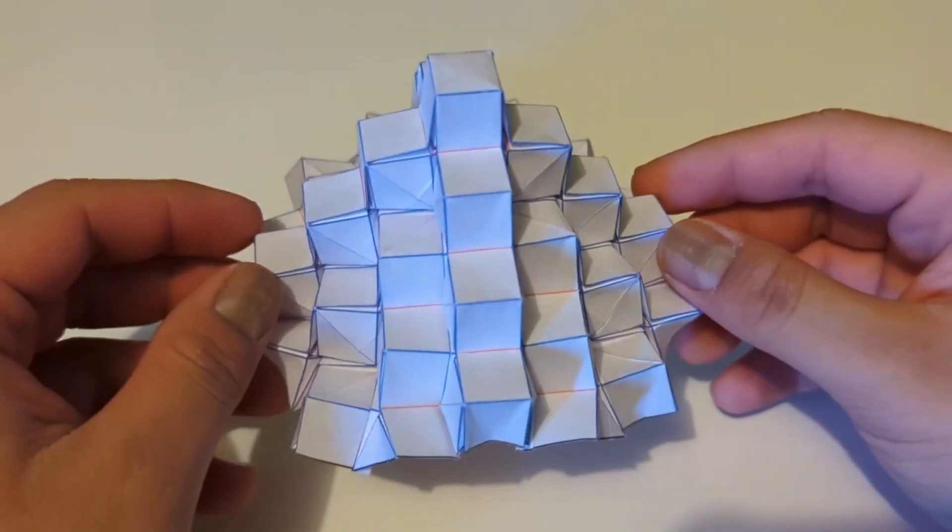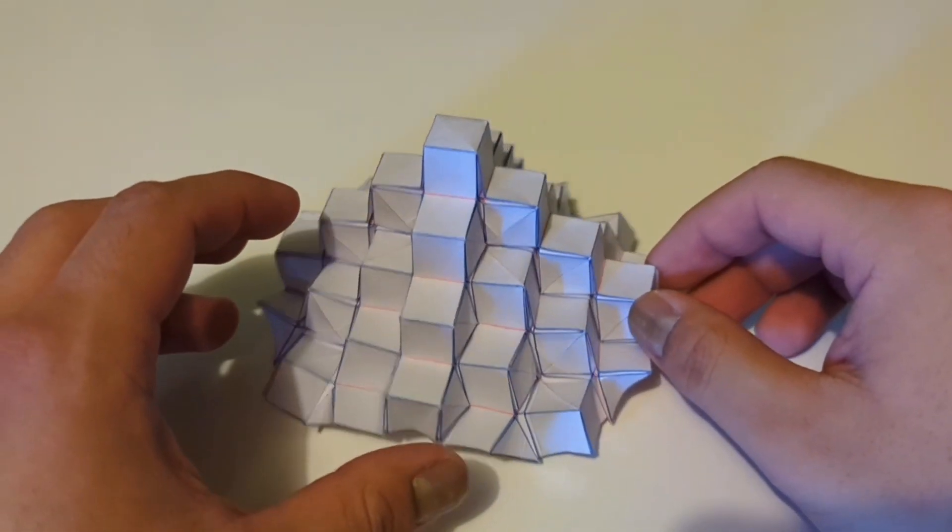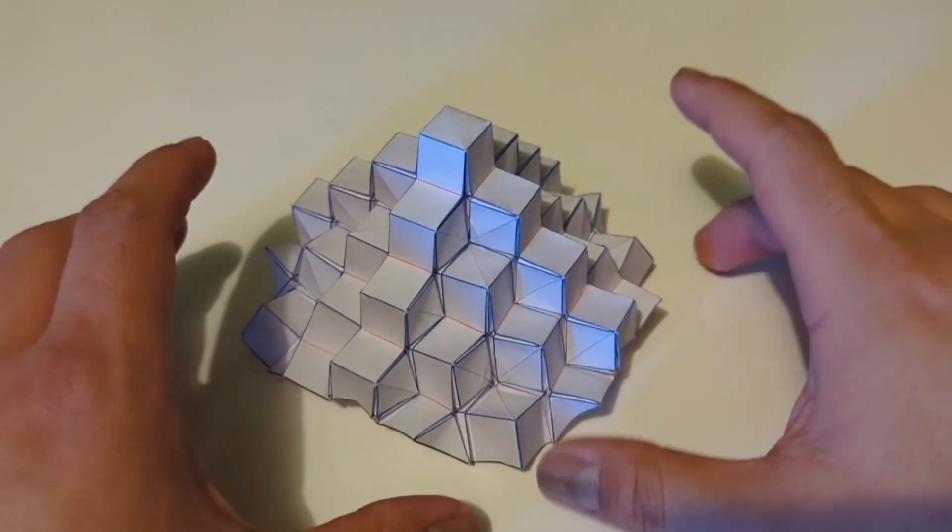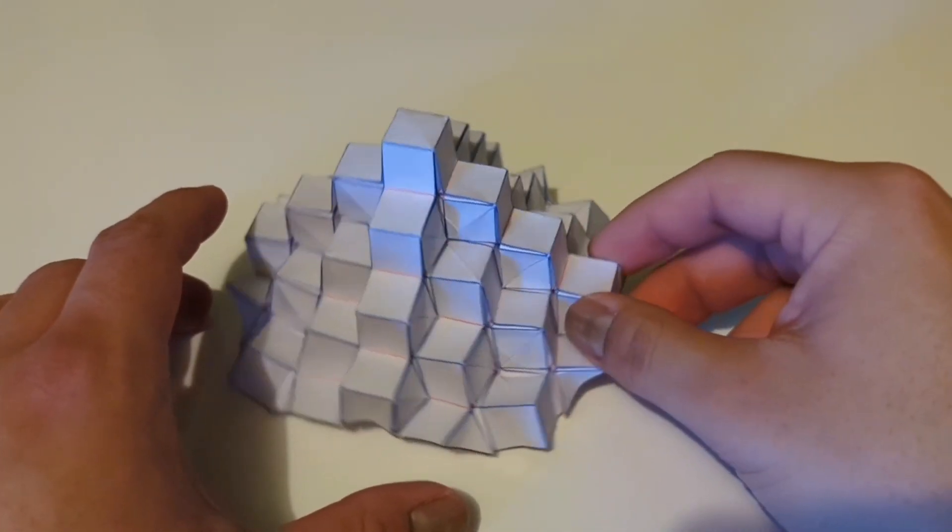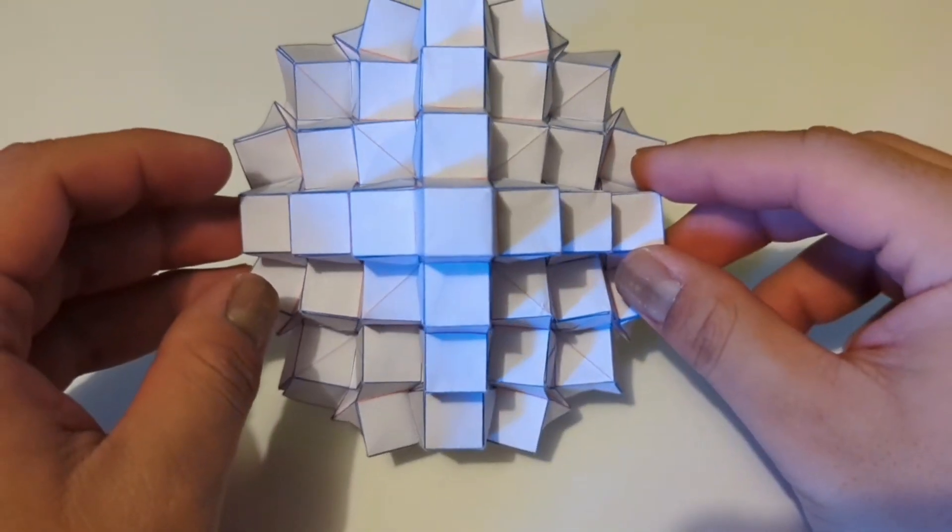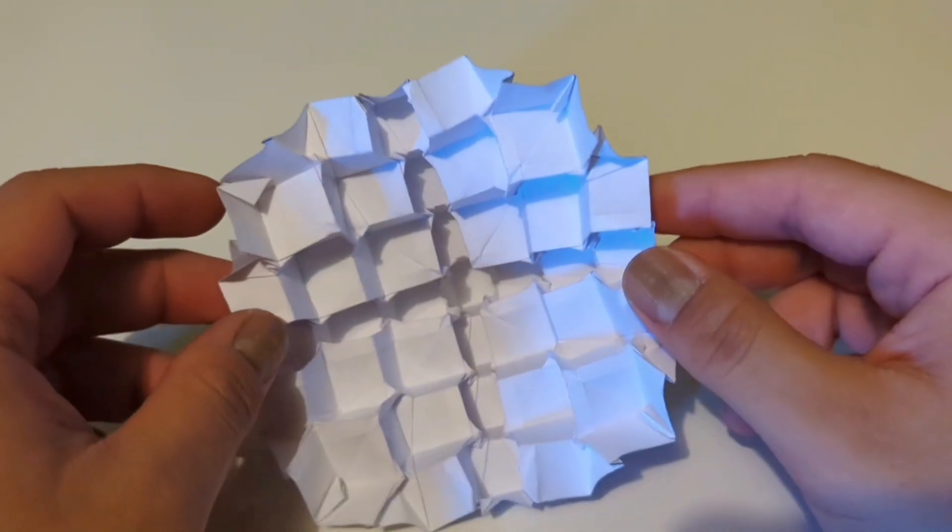This was folded from a 15 by 15 grid of creases, but in order to make it you gotta make a 16 by 16 grid and just cut two strips off to the sides, and right there you have your 15 by 15 grid. That's the only cut needed to make this.